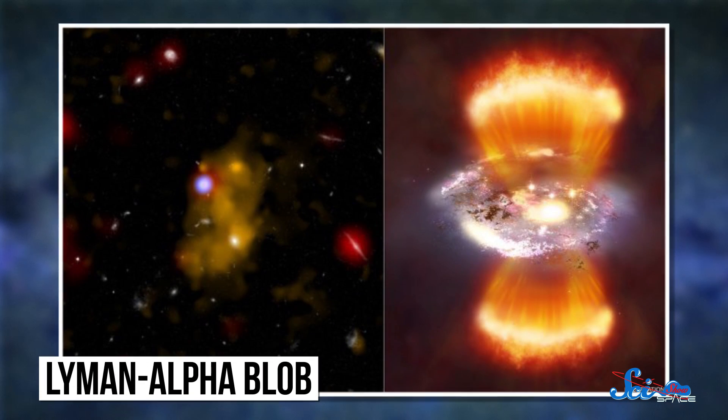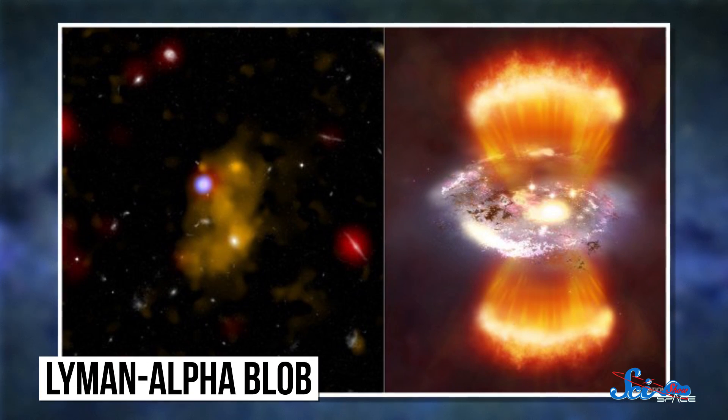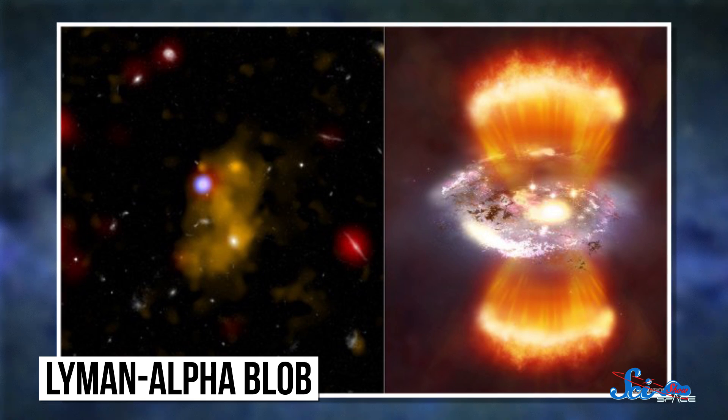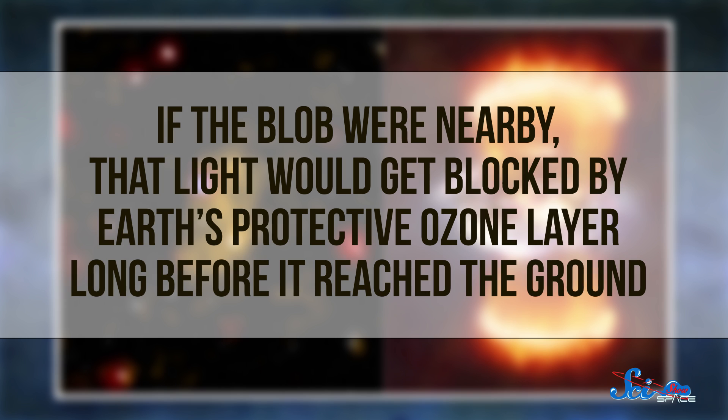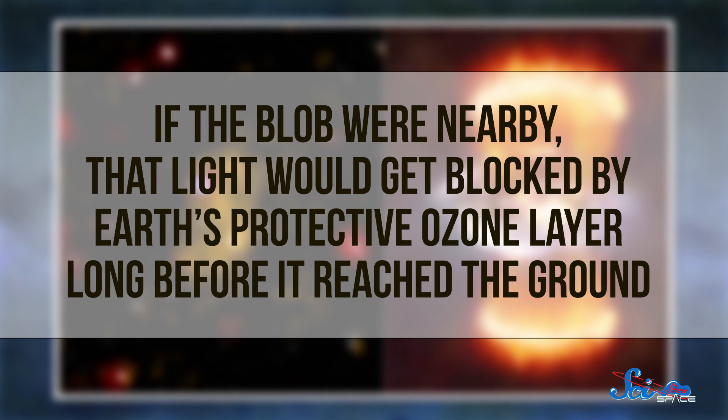Himiko is a type of early galaxy called a Lyman alpha blob, after the particular type of ultraviolet light that its gas gives off. If the blob were nearby, that light would get blocked by Earth's protective ozone layer long before it reached the ground, and astronomers never would have seen it.